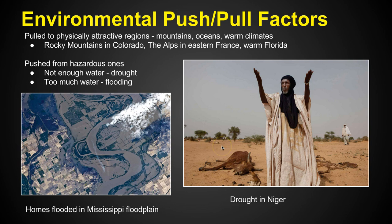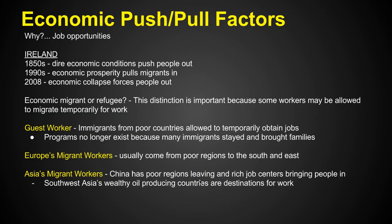The opposite situation is in Niger, where there's drought and no water. You can see this poor animal has perished because there's no water. Now economically, what are the push and pull factors?